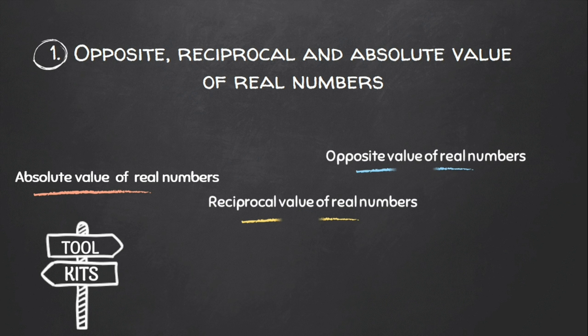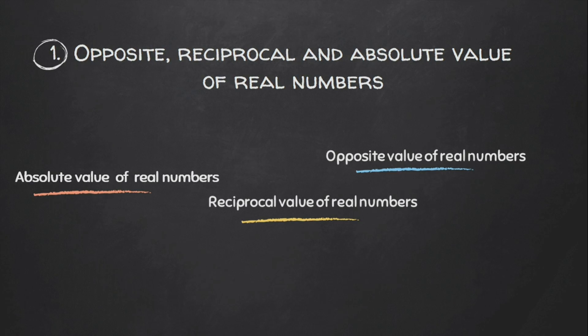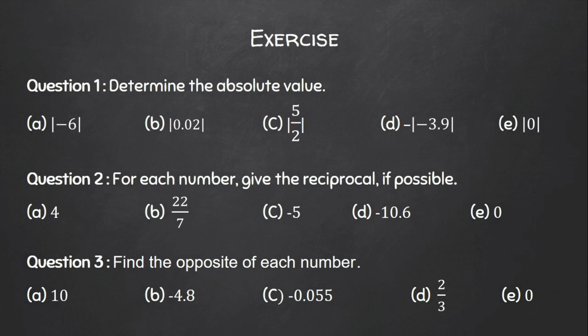To summarize: the opposite value changes the sign of a given number; a number and its reciprocal have the same sign; and the absolute value of a non-zero number is always positive. Now your job is to answer the exercise questions in the comments.